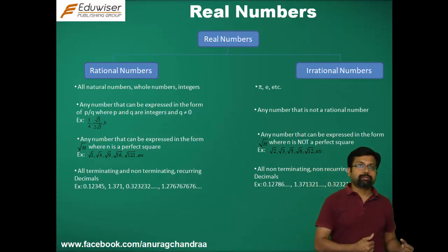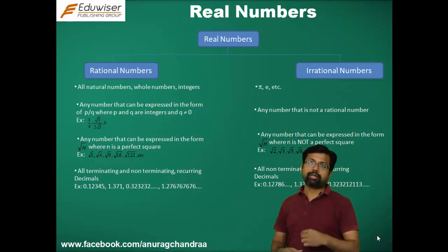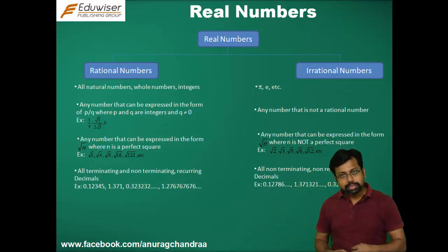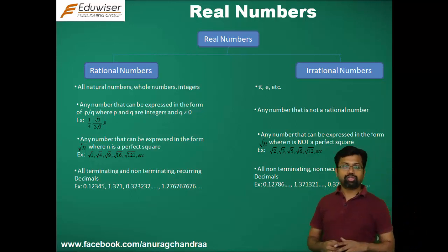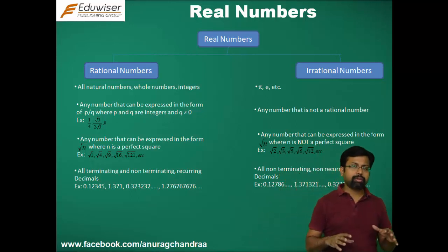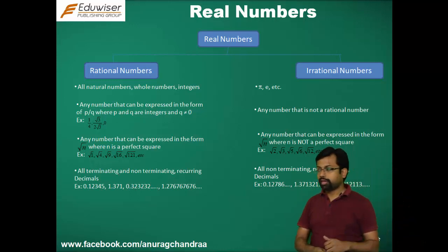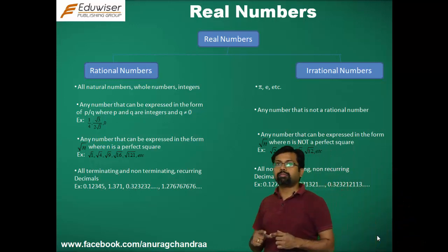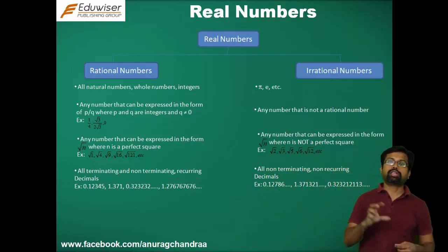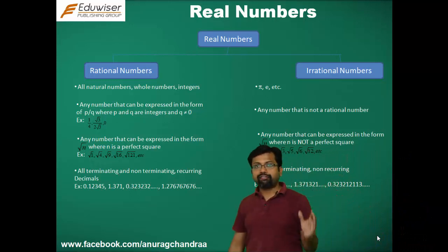The second way is by definition. The definition of a rational number is: any number that can be expressed in the form P by Q, where P and Q are integers and Q is not equal to 0. So you take any number, express it in the form P by Q, reduce it, cancel out the common factors, and if the resulting number has P and Q both as integers with Q not equal to 0, then that number is rational.